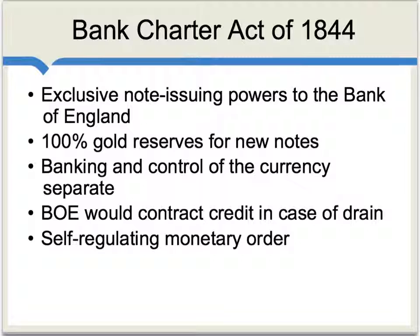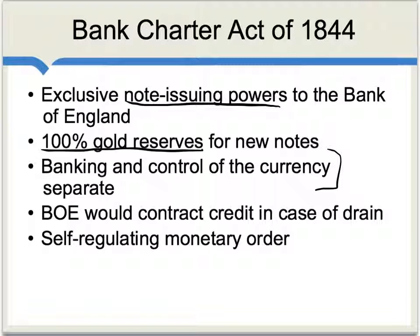First, it tried to centralize exclusive note-issuing powers in the Bank of England. Second, it stipulated 100% gold reserves for new notes above a certain level. It treated banking and control of the currency as separate functions. It also stipulated de facto that the Bank of England would contract credit in case of a drain — that's what the act actually meant in practice.